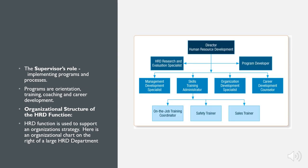Now we're going to continue with HR development functions, starting with the supervisor's role. The supervisor's role is to work on implementing programs and processes. Programs include orientation, training, coaching, and career development.